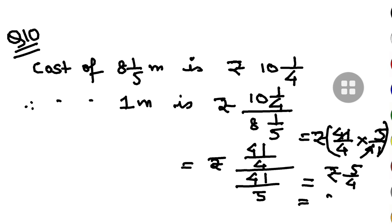5 by 4 if I convert to mixed fraction, this is 1 and 1 by 4. The final answer is rupees 1 and 1 by 4. That is question number 10.